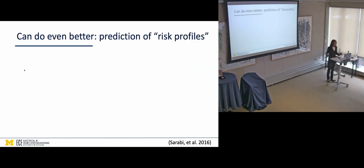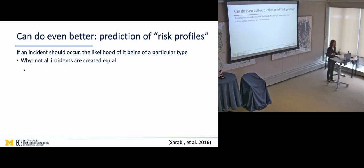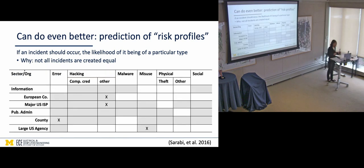You can do even better. You can throw more data into this, use this type of methodology. For instance, we can predict what we call risk profiles. Essentially, looking at, relatively speaking, if an incident should occur, the likelihood of it being of a particular type. And the reason for that is because not all incidents are created equal. Some are more costly than others. A lot of them require very different types of prevention and mitigation. So, here's an example.